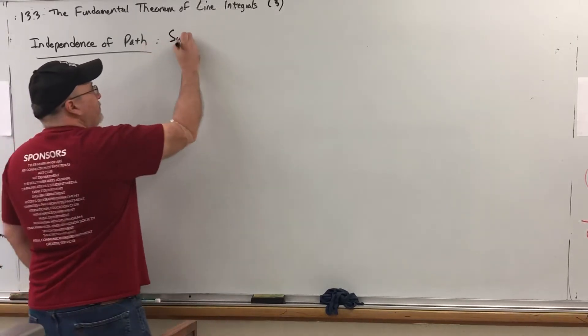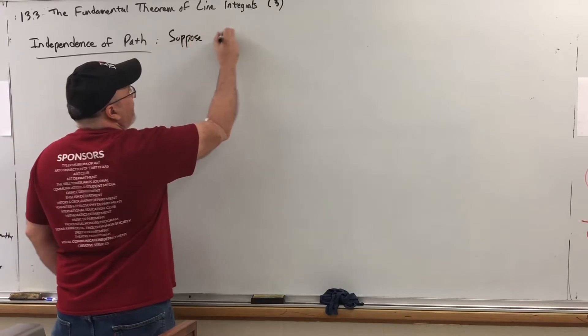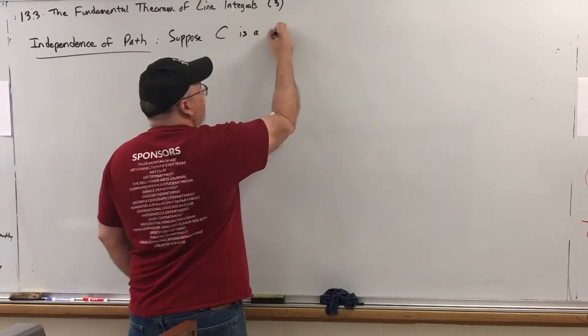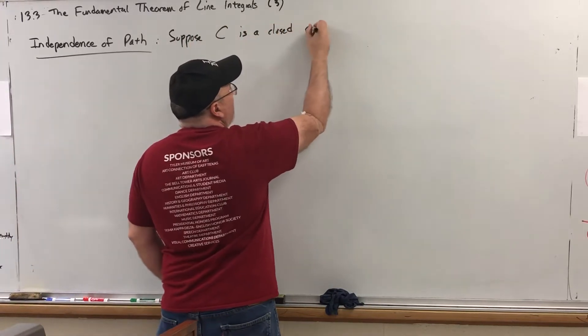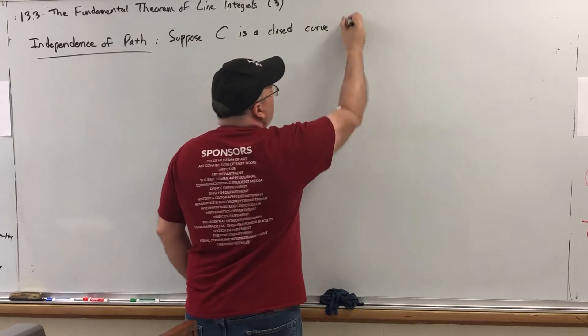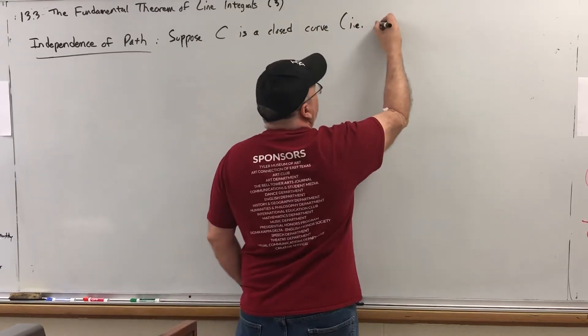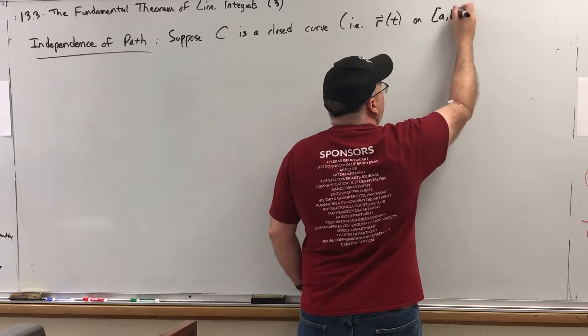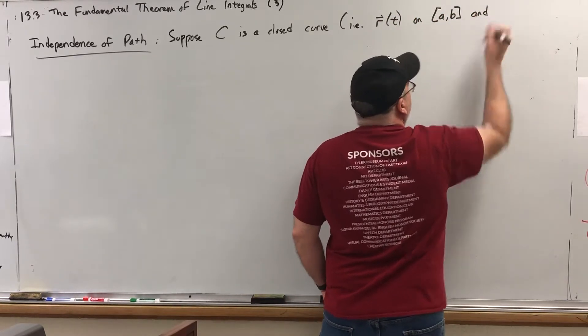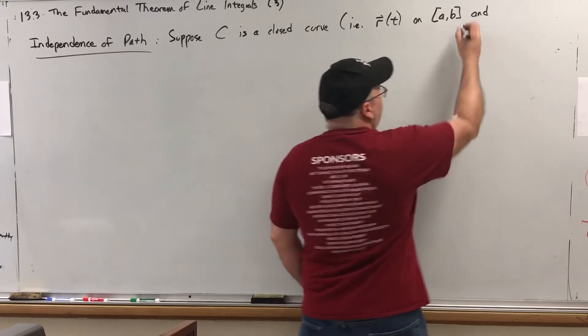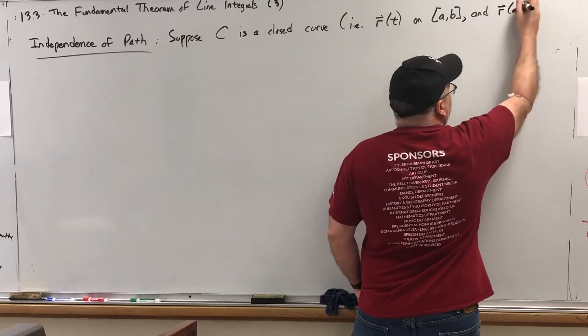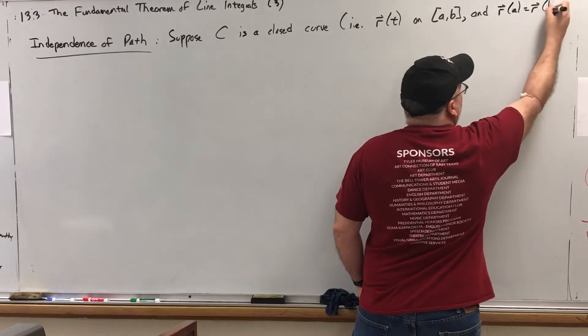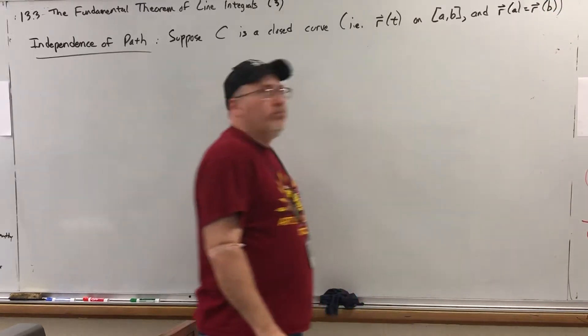I mean a curve whose initial point is the same as its terminal point. So, let's suppose C is a closed curve. In other words, if it's defined by a vector function R of T on the interval AB, we would have that R of A is equal to R of B. And, again, it ends where it starts.